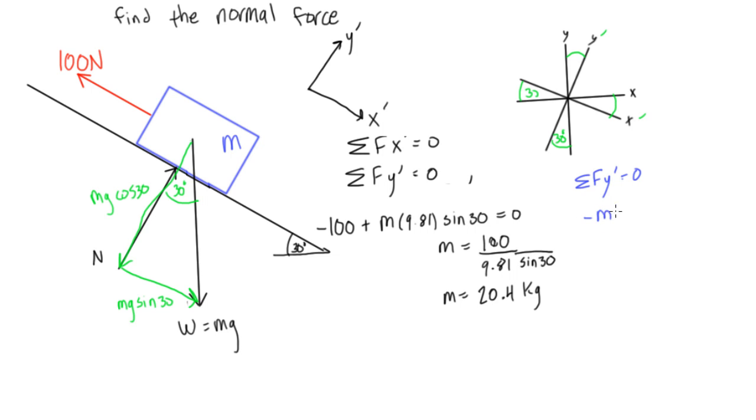So we will have negative mg cos 30 plus now our normal force number was going in this direction in the positive y direction, plus n is equal to zero. So if we just move this stuff over to the other side, we'll have n is equal to 20.4 times 9.81 times cos 30.